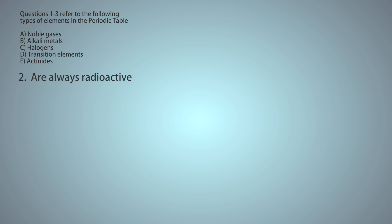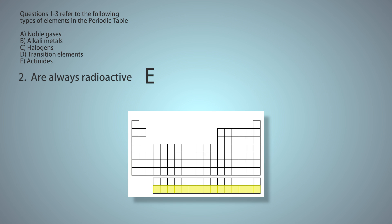Question 2: Which elements are always radioactive? These are the actinides, which are found in that strip on the bottom of the periodic table. You may not have realized that all the actinides were radioactive, but you've probably heard of plutonium and uranium, which are used in bombs.